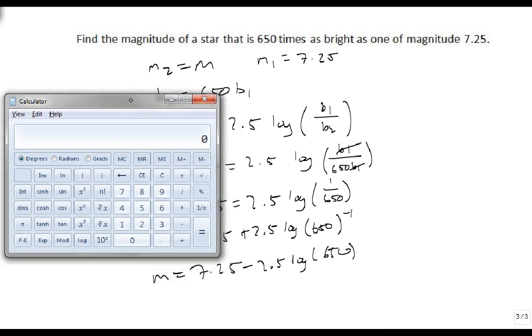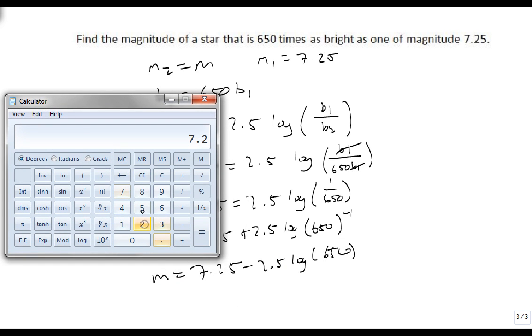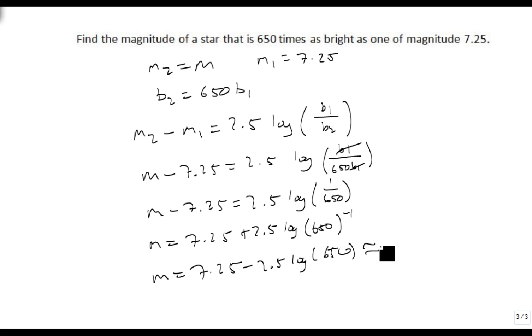So we get our calculator out. 7.25 minus 2.5 times 650 log equals. And so this means that this M is approximately equal to 0.2177. That's the magnitude of a star that's 650 times brighter than one of magnitude 7.25.